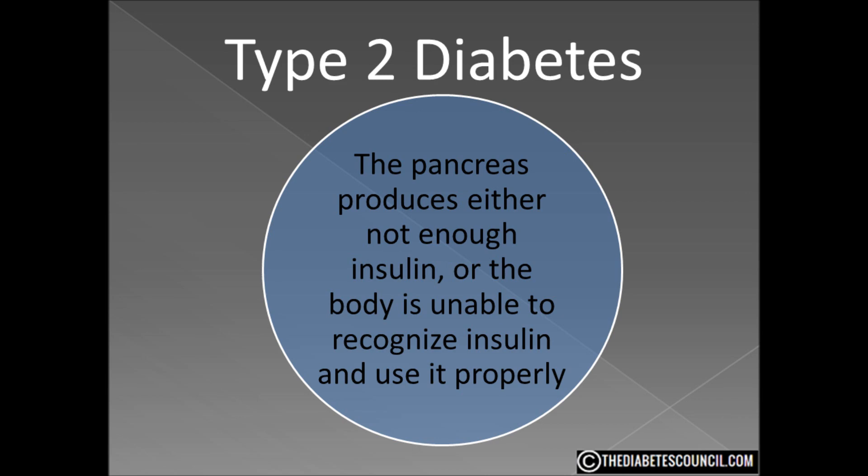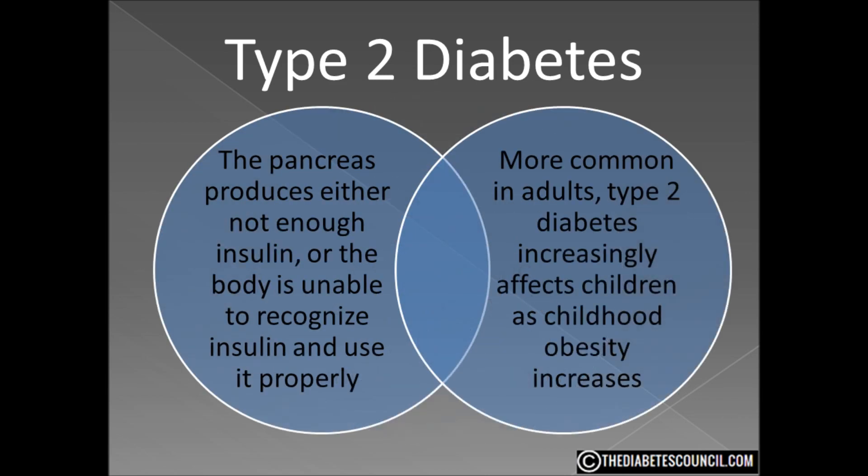This condition was once known as adult onset or non-insulin dependent diabetes. Most common in adults, type 2 increasingly affects children as childhood obesity increases. There's no cure for type 2 diabetes, but you may be able to manage the condition by eating well, exercising, and maintaining a healthy weight. If diet and exercise aren't enough, then you'll go on medication or insulin therapy.